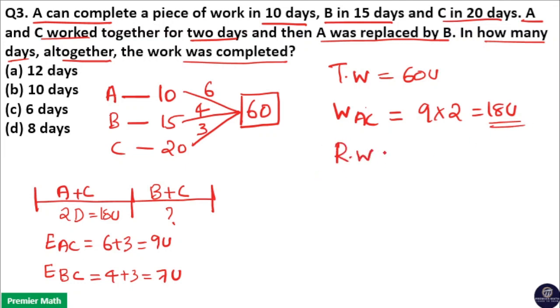So the remaining work is total work is 60, completed work is 18. So remaining work is 42 unit. So this is completed by B and C. So time taken by B and C to complete the remaining work. Remaining work is 42 unit and efficiency of B and C is 7 unit.